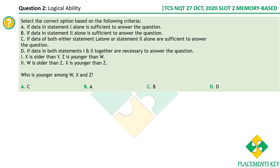The next question: select the correct option based on the following criteria. These are data sufficiency-based questions. The approach: first check statement one alone, then statement two alone, and if you can't answer, combine both statements. The question is: who is younger among W, X, and Z?